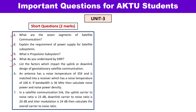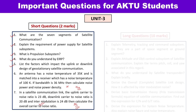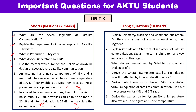There are two numericals listed here. In the first, you need to calculate noise power (N) and noise power spectral density (N₀). In the second, you have to calculate the overall carrier-to-noise ratio, including the effect of intermodulation noise. You also need to practice numericals based on the Friis transmission equation.